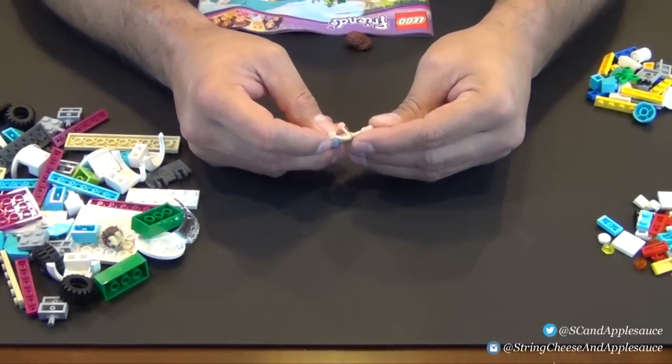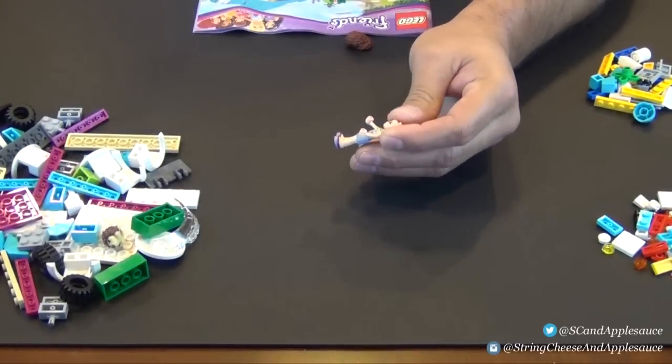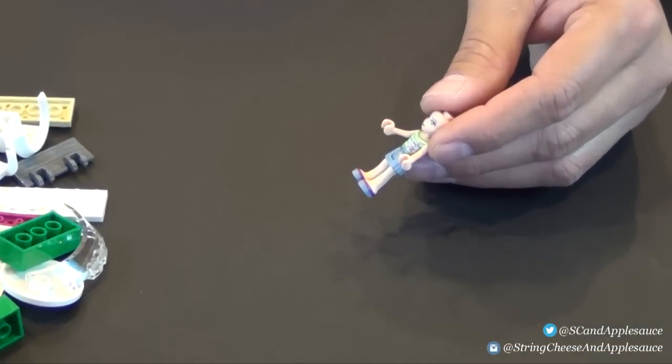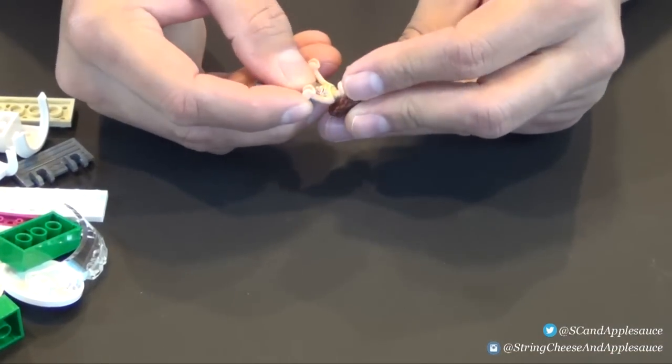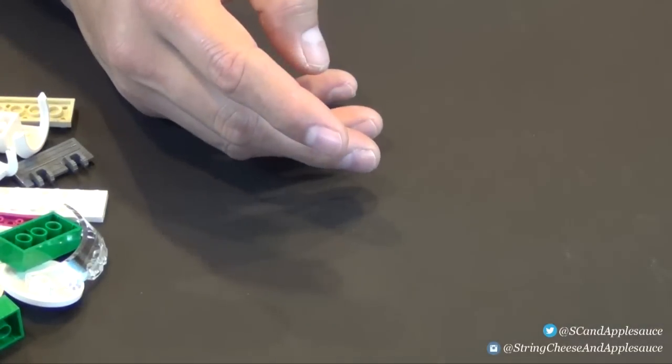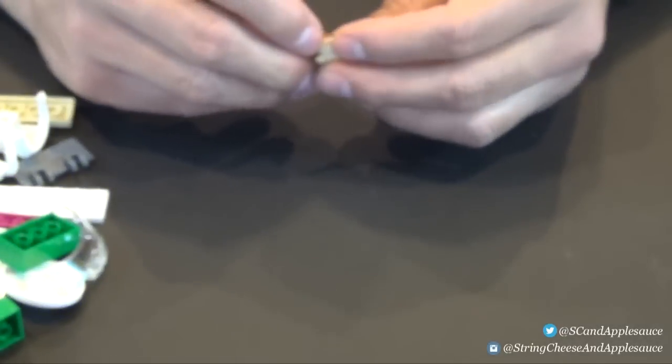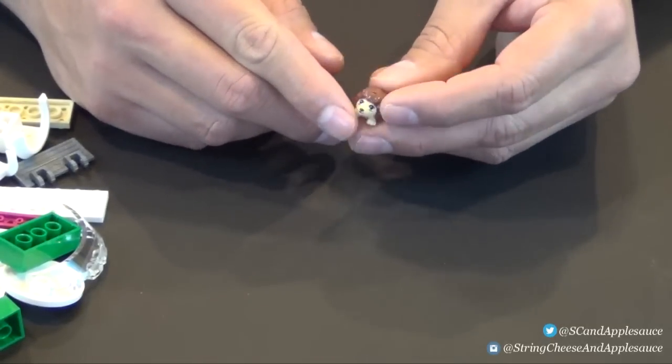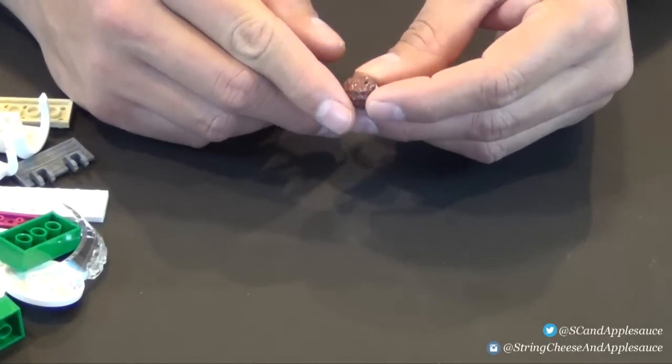Bag number one, we're only building one minifigure, and that's going to be Olivia. Let's pull her little pieces out, they're in their own little bags. The torso and the legs. We're not going to look at the details too closely on this set because I will do a review where we'll look at the minifigures and play features. There's Olivia, that's our first minifigure. Put her off to the side.